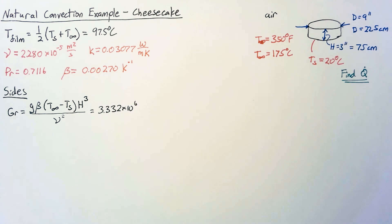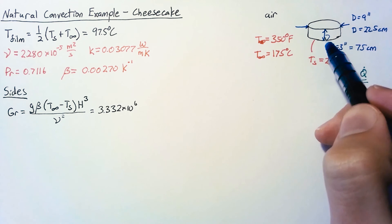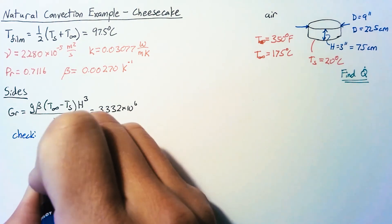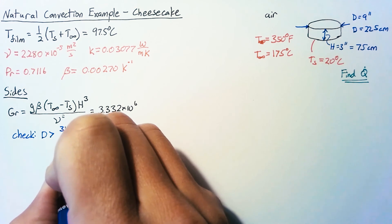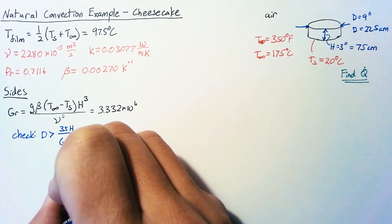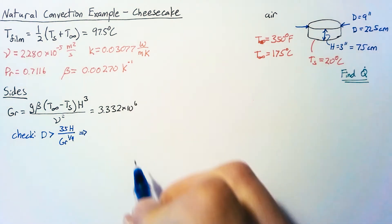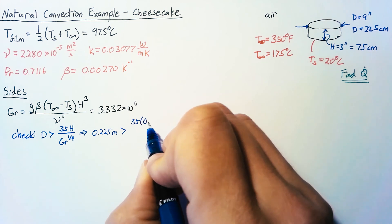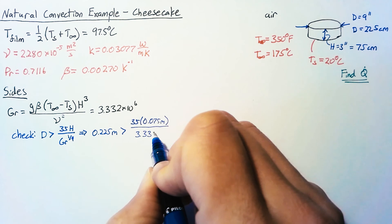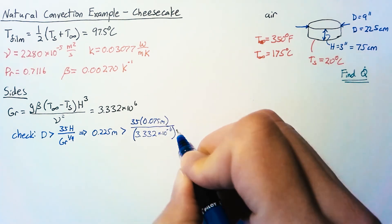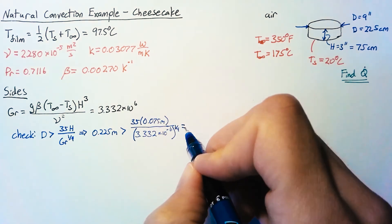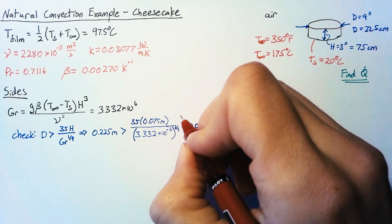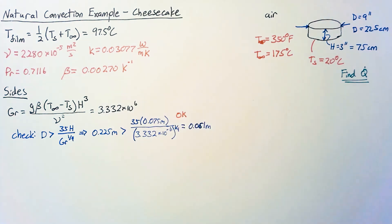We have to do a check to make sure that the effect of the curvature of those walls isn't too much and we can actually treat this as a straight vertical surface and that check is simply that our diameter is greater than 35 times the height divided by the Grashof number to the one fourth. So if this diameter that we have 0.225 meters is greater than 35 times 0.075 meters divided by 3.332 times 10 to the negative six to the one fourth power then we're in good shape. And in fact this right hand side here becomes 0.061 meters. So our value here is okay. We're good to move on and use the vertical wall as our geometry.